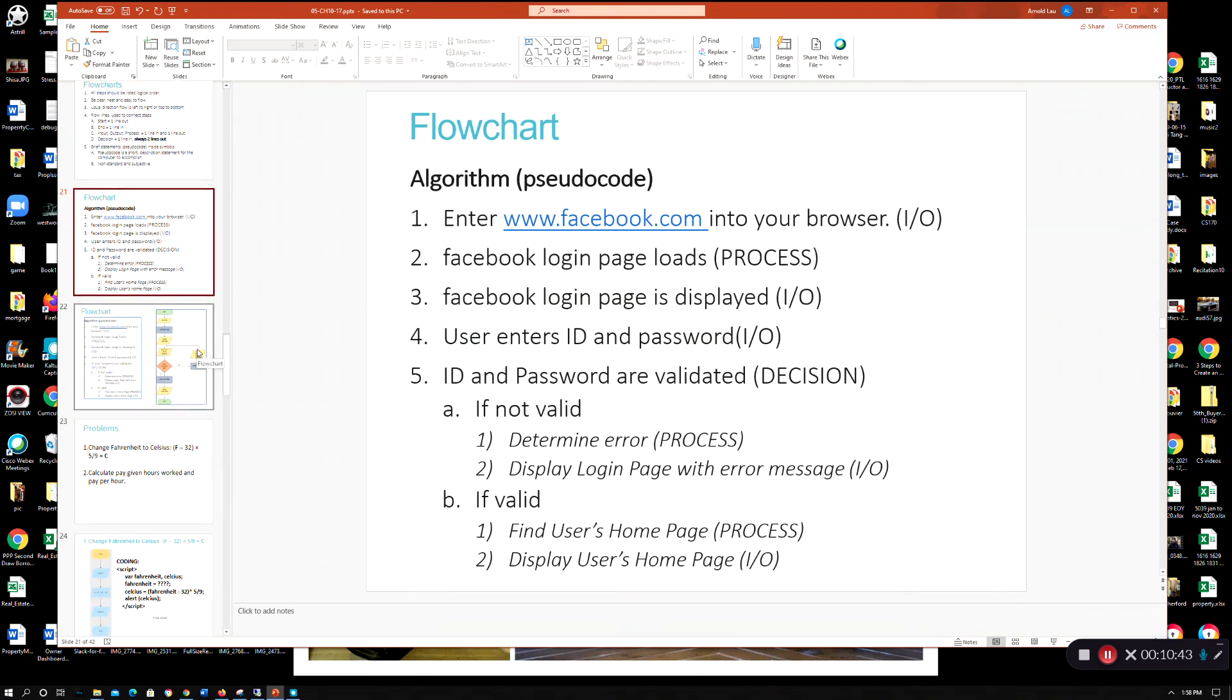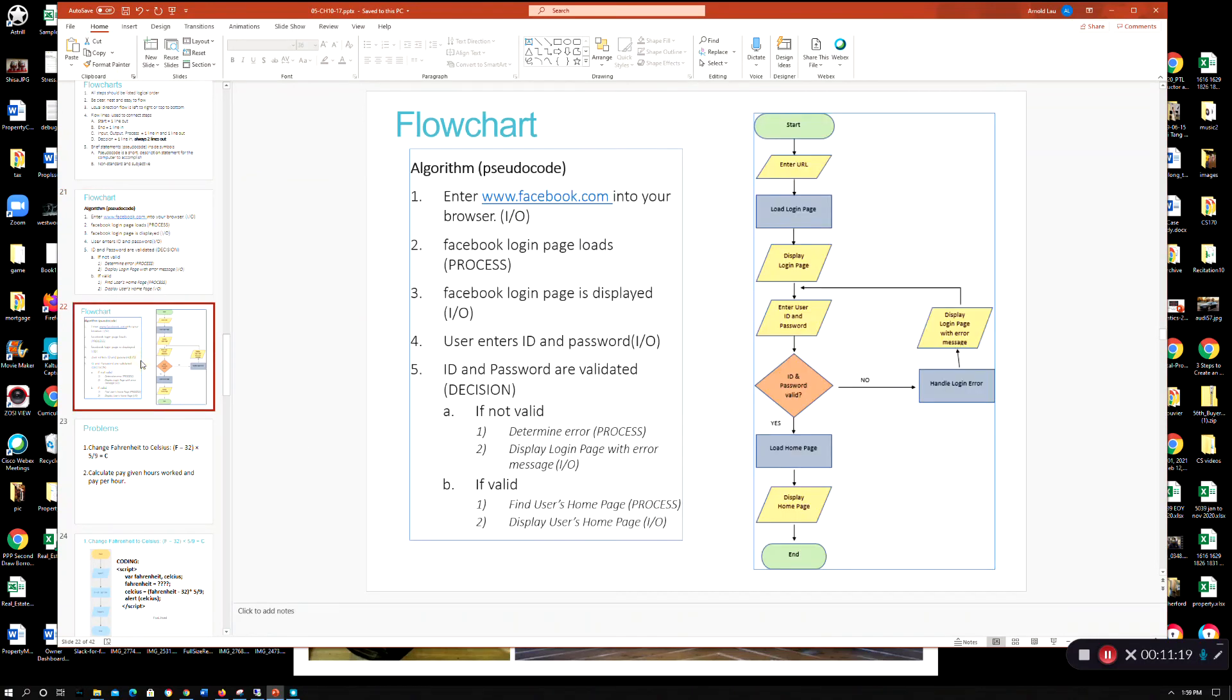So here's an example for a flowchart or algorithm pseudocode. Here you enter Facebook into your browser. That's your URL, and then you're going to have the page load up. Then you're going to display the page. You're going to enter your ID and password. It's going to validate those things to see if you can actually log in. If it's not valid, it'll tell you that you're not valid. If it is, it'll take you to your home page.